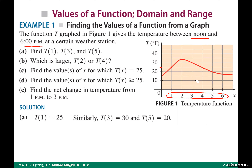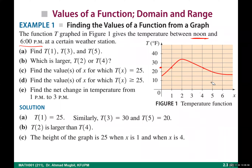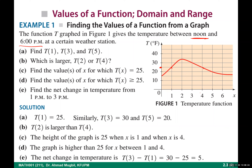Find the values of x for which the temperature is greater than or equal to 75. The answer is the interval from 1 to 4 — a period of time from 1 to 4. The last part: find the net change in temperature from 1 to 3 PM, meaning how much the temperature has changed. It equals T(3) minus T(1), which is 30 minus 25, equal to 5.